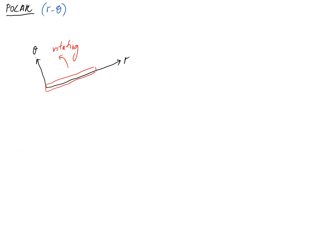This coordinate system is quite useful if for example your bar was able to extend because then that extension would be completely in that r direction. And then theta would measure the rotation or the rate of rotation of that bar.